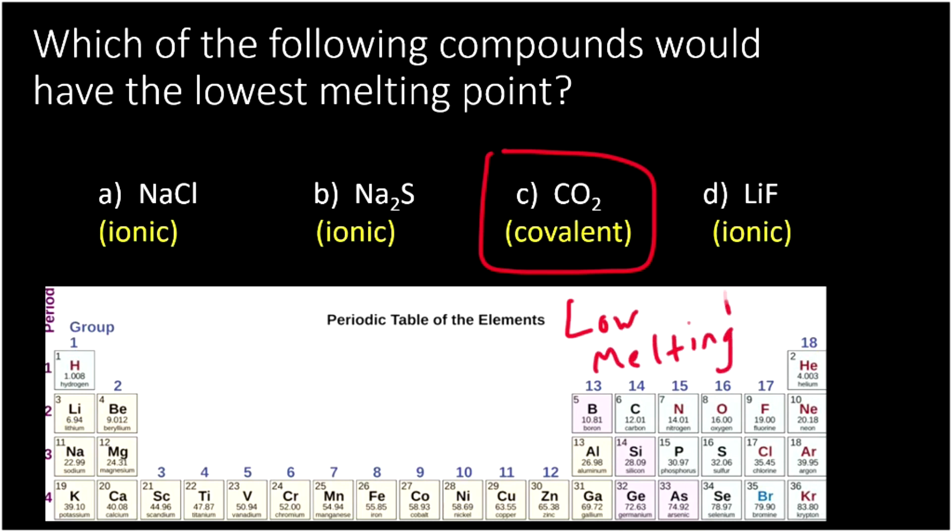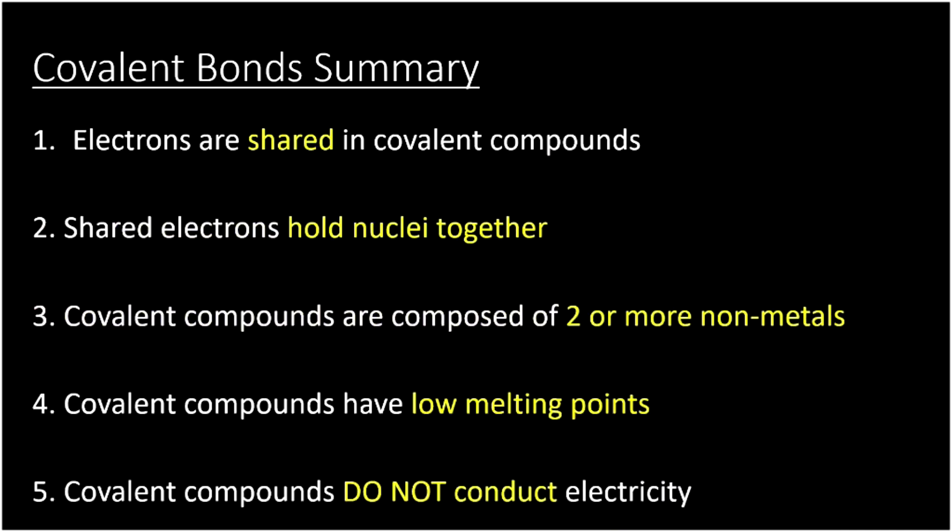So covalent compounds tend to have low melting points and tend to not be conductive. Let's review. Electrons are shared in covalent bonds. That's different than ionic bonds, where electrons are transferred from one atom to another, and then the difference in charge holds them together. The shared electrons hold covalent compounds together. We can recognize covalent compounds by remembering that they're made of two or more non-metals, and they typically have low melting points and do not conduct electricity.